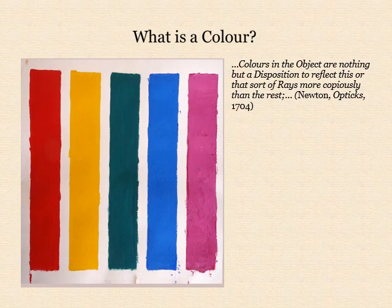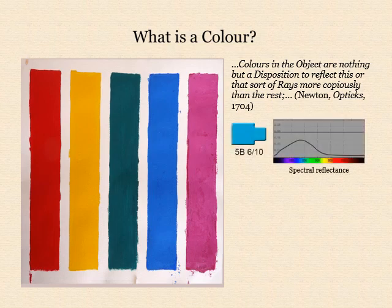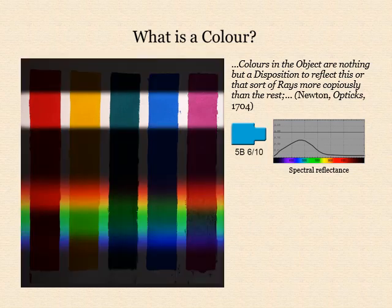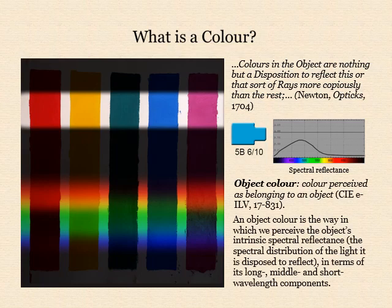So far we've been considering colours of lights, but what about colours of objects? Newton additionally recognised that colours in the object are the object's disposition to reflect this or that sort of rays more copiously than the rest — what we would now call the object's intrinsic spectral reflectance. Newton observed the spectral reflectances of various artist's pigments directly by shining a solar spectrum onto them in a darkened room. A colour that we perceive as belonging to an object is called an object colour. An object colour is the way in which we perceive the object's intrinsic spectral reflectance if the object is opaque, or its spectral transmission if the object is transparent. The perceivable property is not the spectral reflectance in all its detail, but its overall composition in terms of its long, middle and short wavelength components.